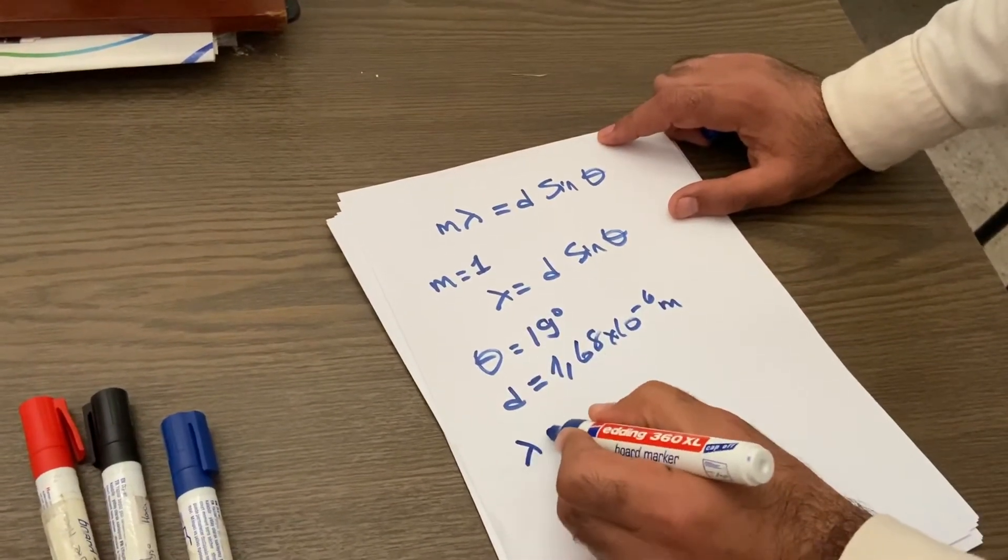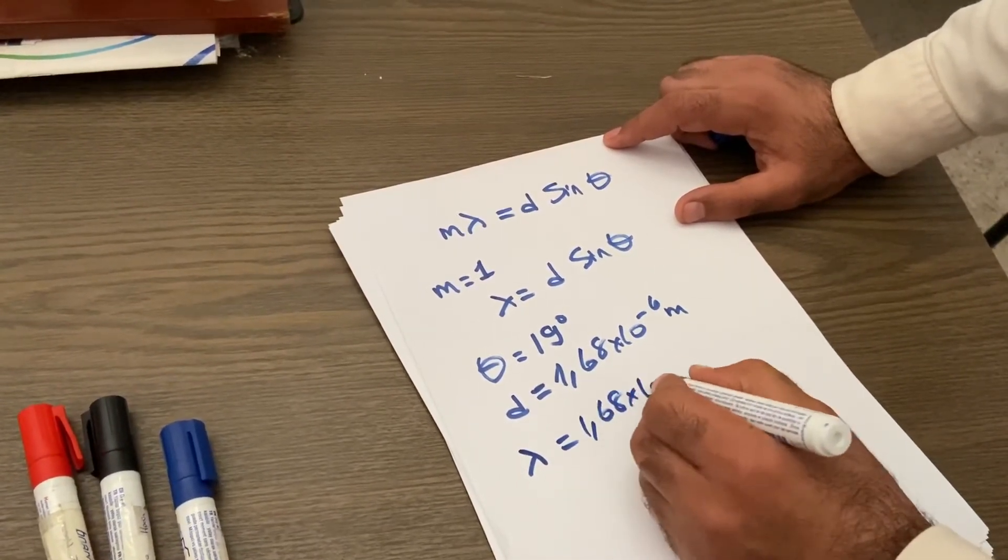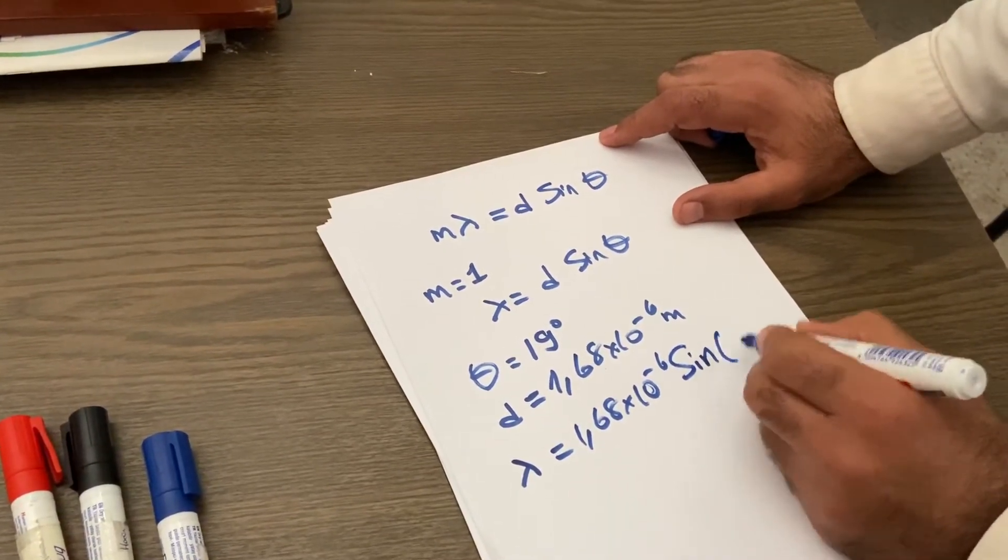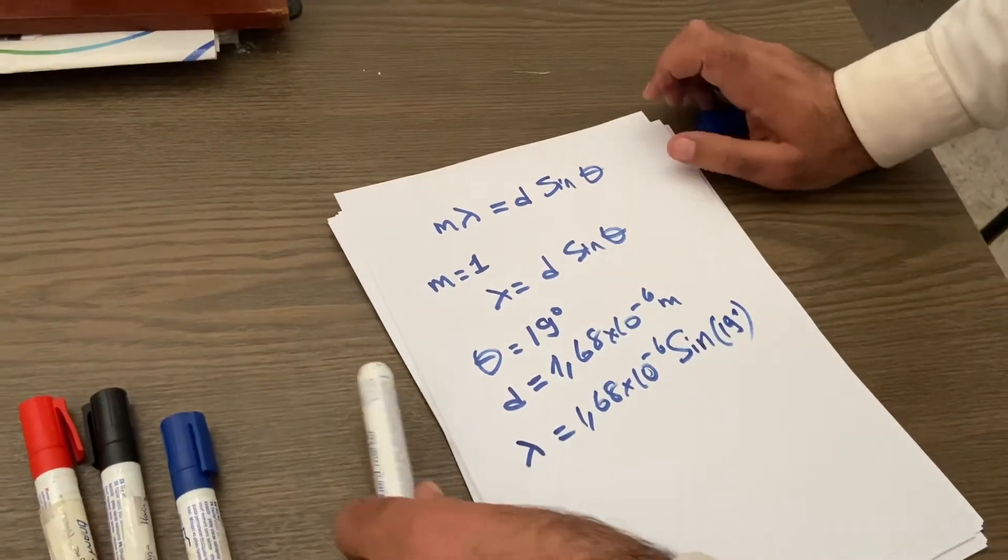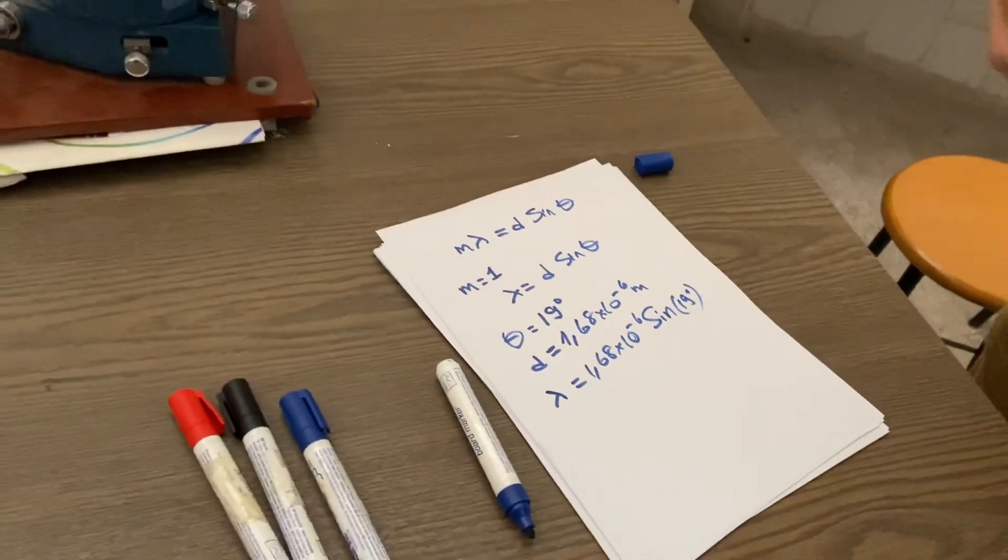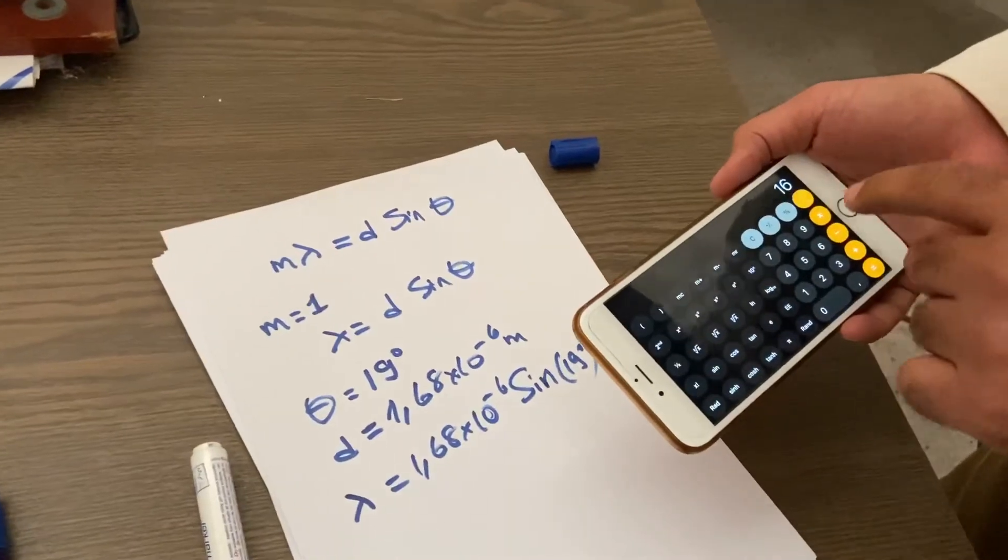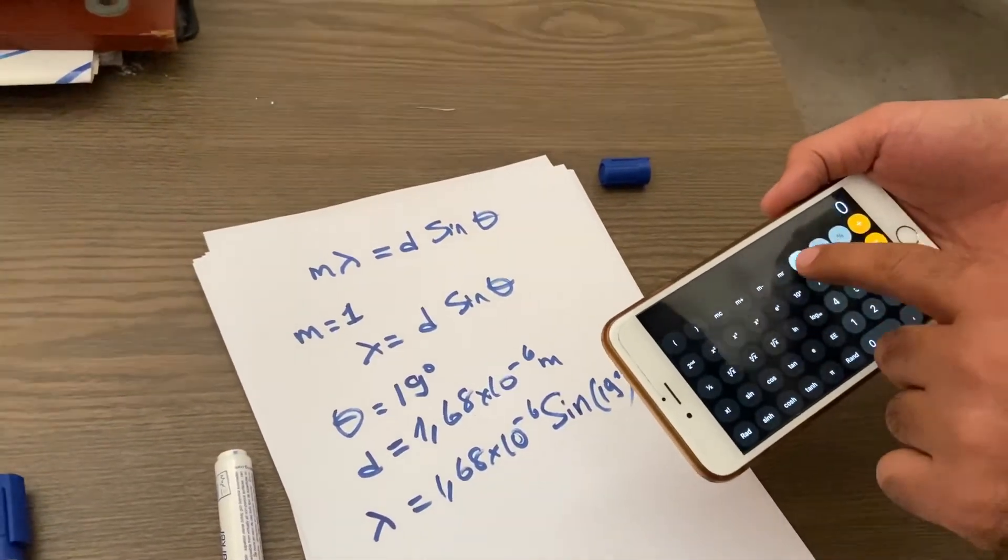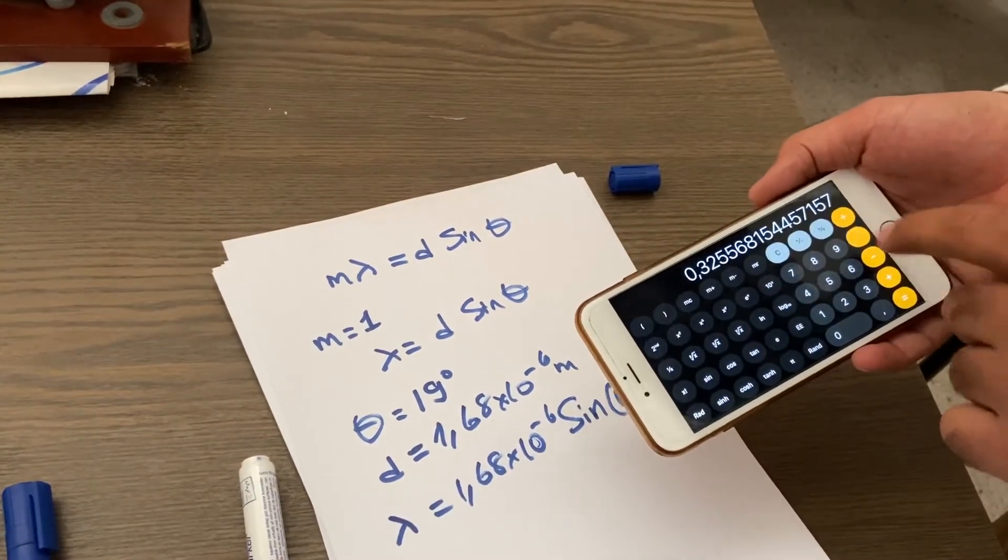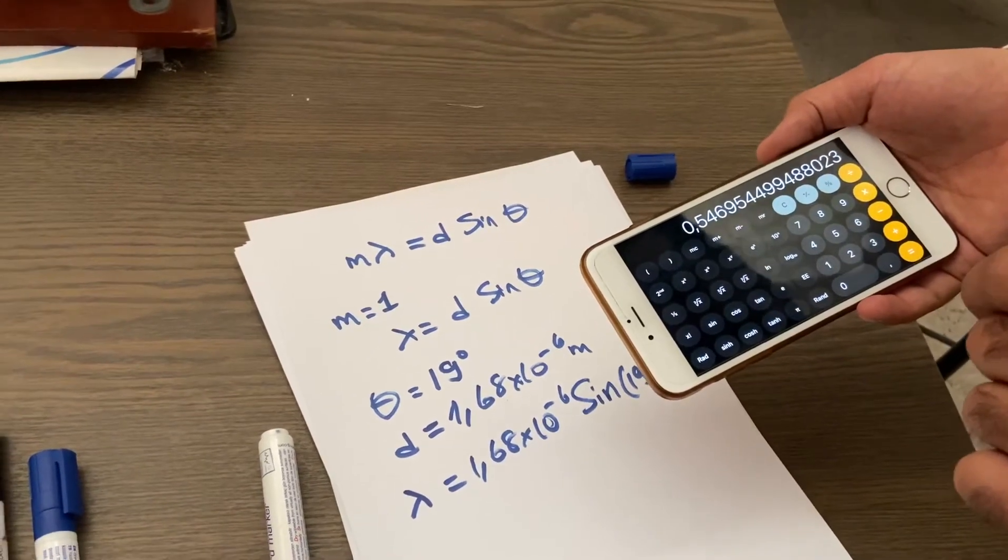And if you calculate it, lambda equals one point six eight times ten to minus six times sine of 19 degrees. If you calculate this, it is around—let's see—sine of 19, times one point six eight.